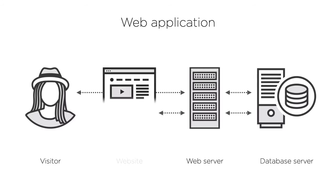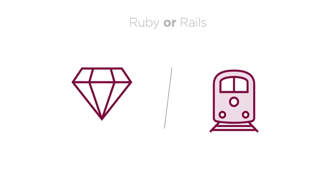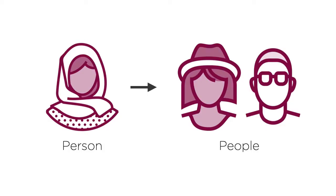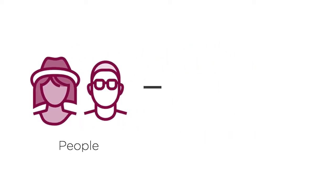First, we'll cover what Ruby on Rails is, where does Ruby the language end, and where Rails the framework begins. We'll look at what Ruby on Rails stands for, its conventions and philosophies like convention over configuration, because those inform how you can use Rails most efficiently and be very productive as a result.